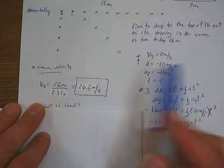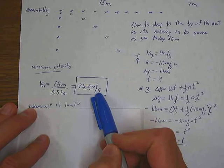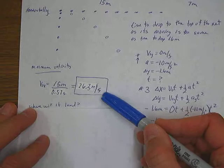So if I just take that 15 meters and divide it by 0.57 seconds, I get something around 26 meters a second, at least is the speed I have to hit to get it over the net.